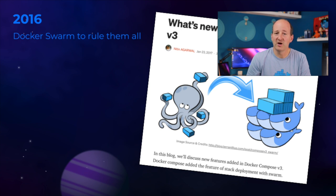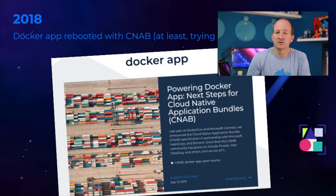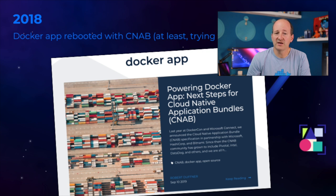In 2018, Docker announced Docker Application Packages, or Docker App, a new project next to Docker Compose. It was designed to address one of the main issues: while you can share container images through the Hub, there's no simple way to share Compose files and parameters to actually distribute an application. The project was not as successful as expected, and there was an attempt to boost adoption by including support for Cloud Native Application Bundles (CNAB) — a kind of universal installer for cloud resources. This added more complexity and didn't help make it successful.